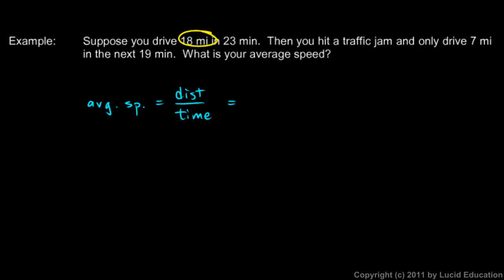That will be the 18 miles that we went before we hit the traffic and the 7 miles that we went after we hit the traffic. So for distance, up here in the numerator, I'll put 18 miles plus 7 miles. That will be divided by the time.